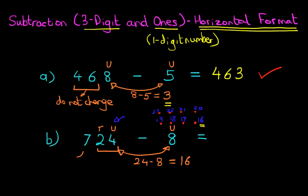Now how about the hundreds? Well, we do not need to subtract anything. This does not change. So therefore, our answer is 716. 724 minus 8 equals 716.